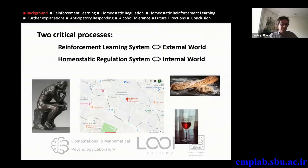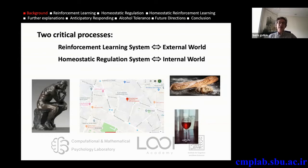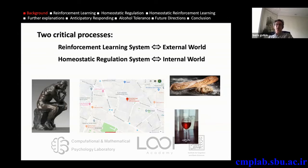Those systems really determine our physiological needs, and therefore they track the internal world. You can see that these two different motivation-governing systems interact with two different worlds: reinforcement learning with the external world — how do you navigate to something that you want? — and the homeostatic regulation system with the internal world — how do you define what it is that you want?